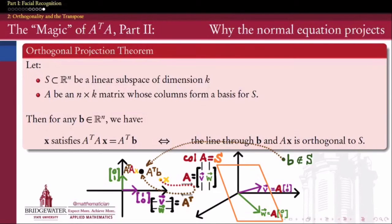then the theorem guarantees that if I multiply X by A and land back over here inside the column space of A, which is S, that the line drawn through that point and the point B is perpendicular to S. And the converse is also true. If the line drawn through B and AX is orthogonal to the vector space S, then X will satisfy the normal equations.